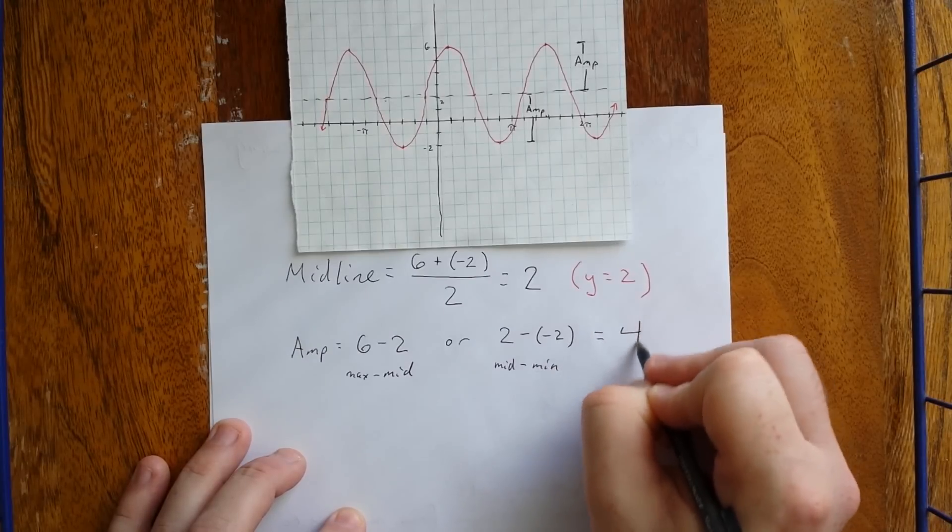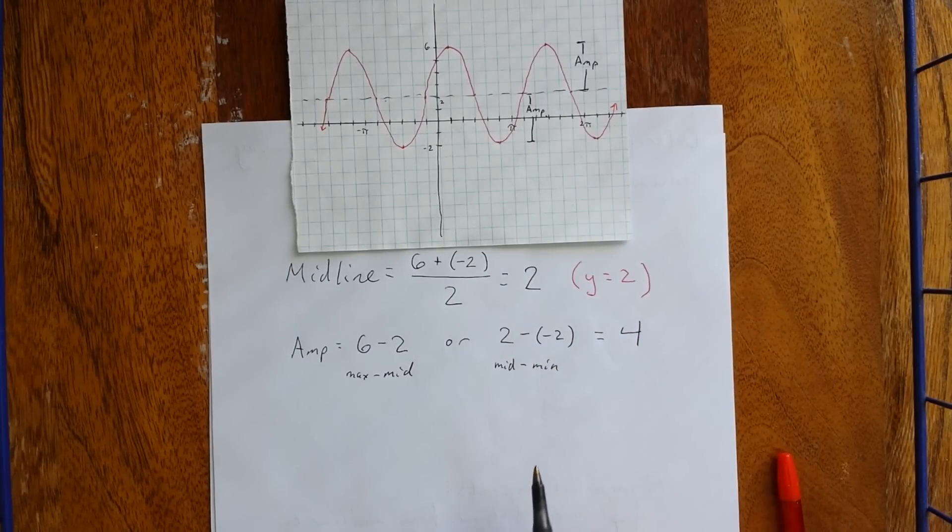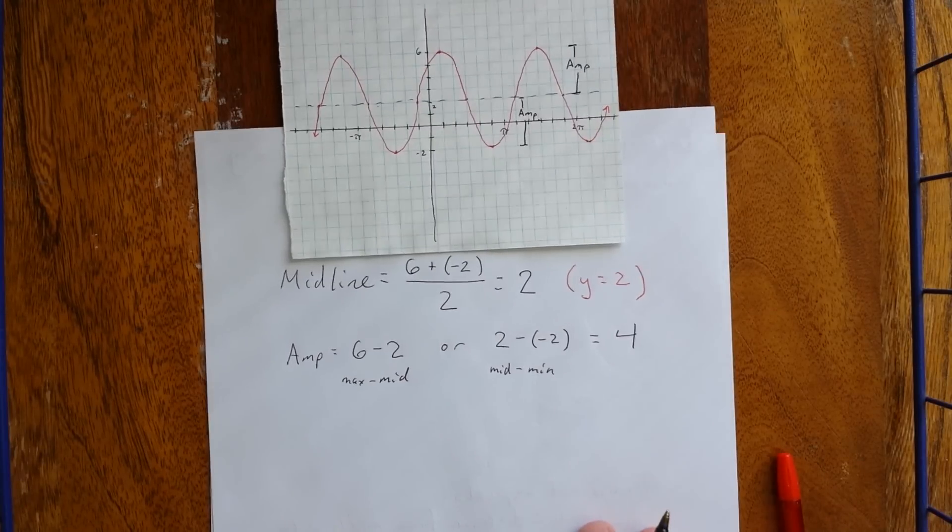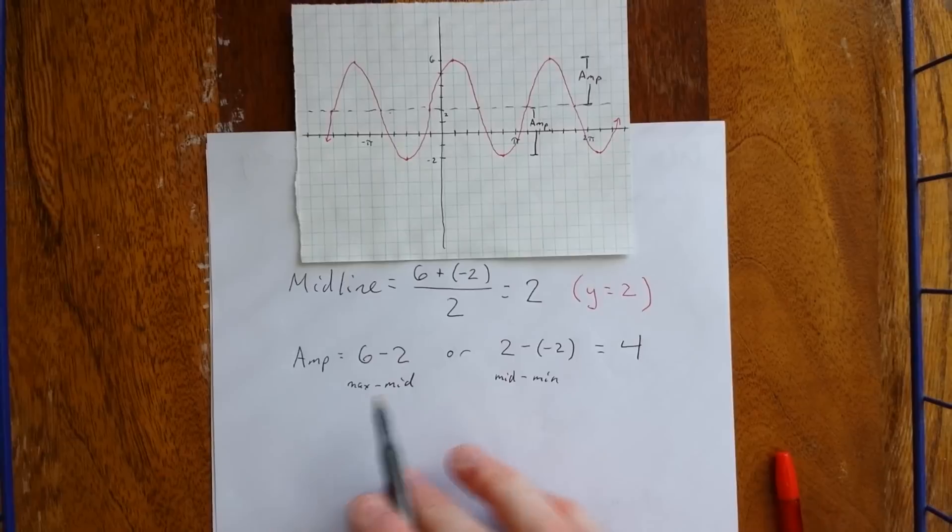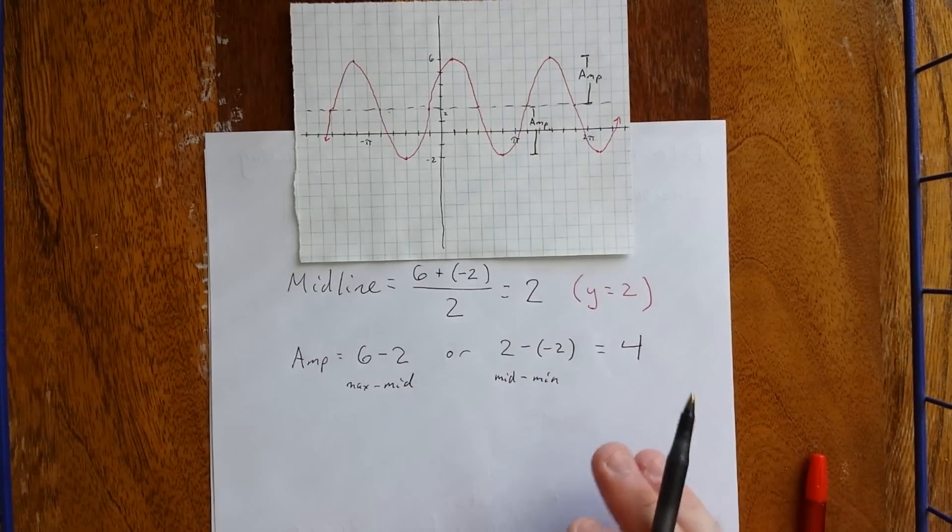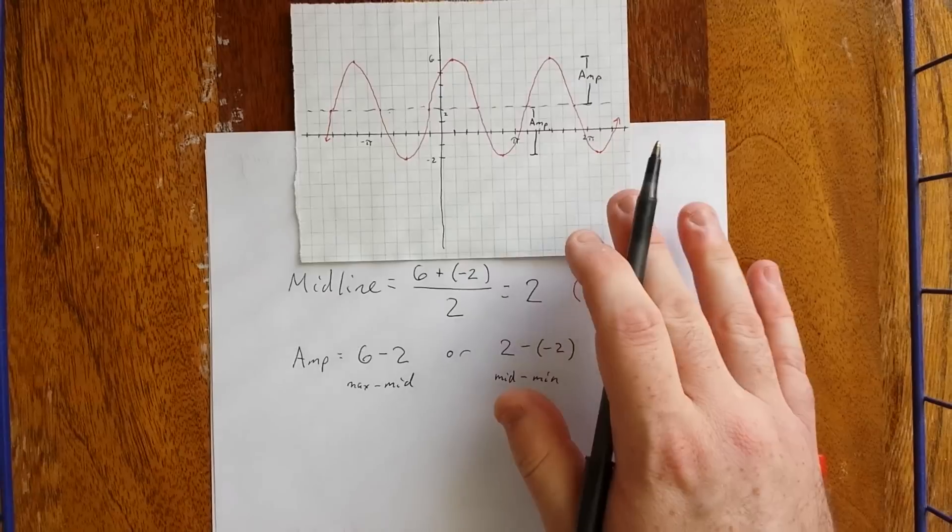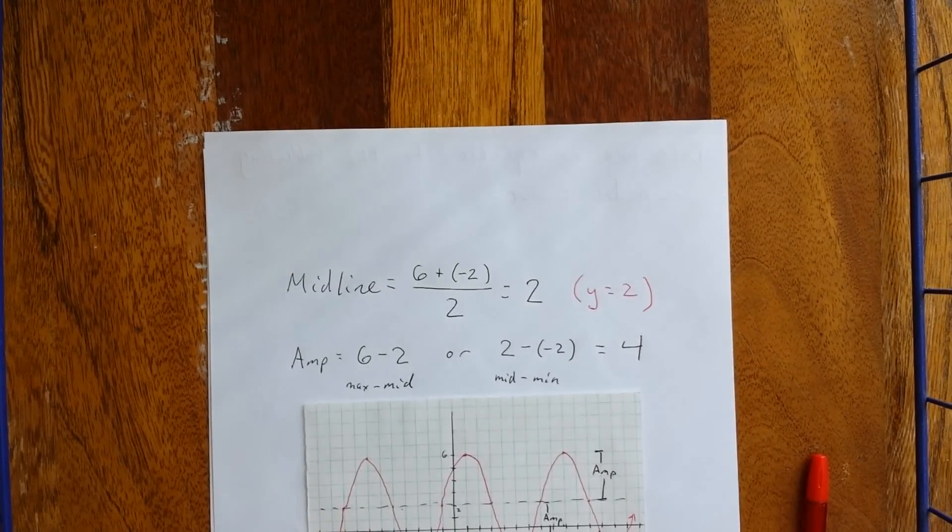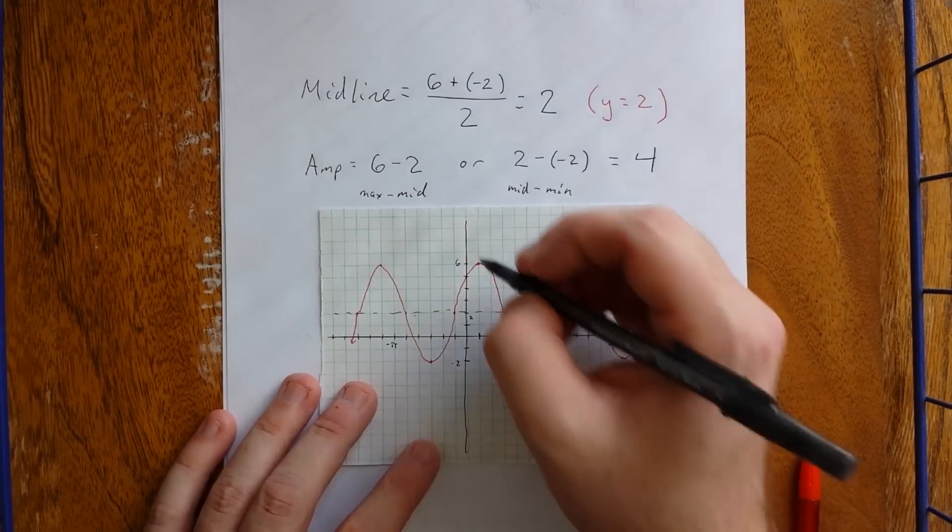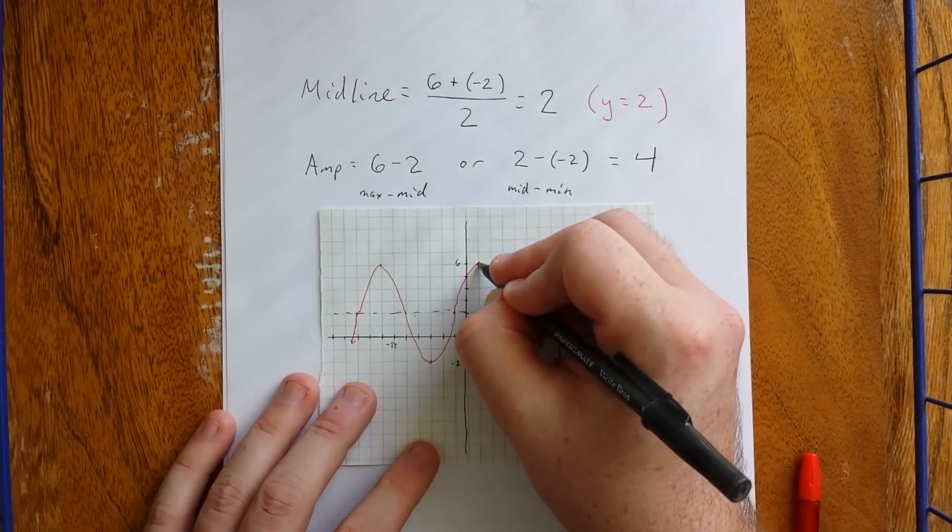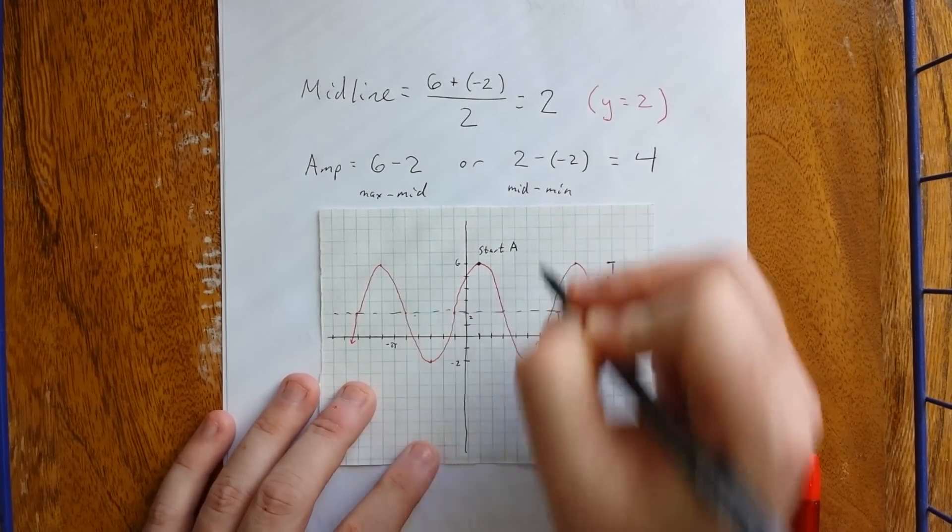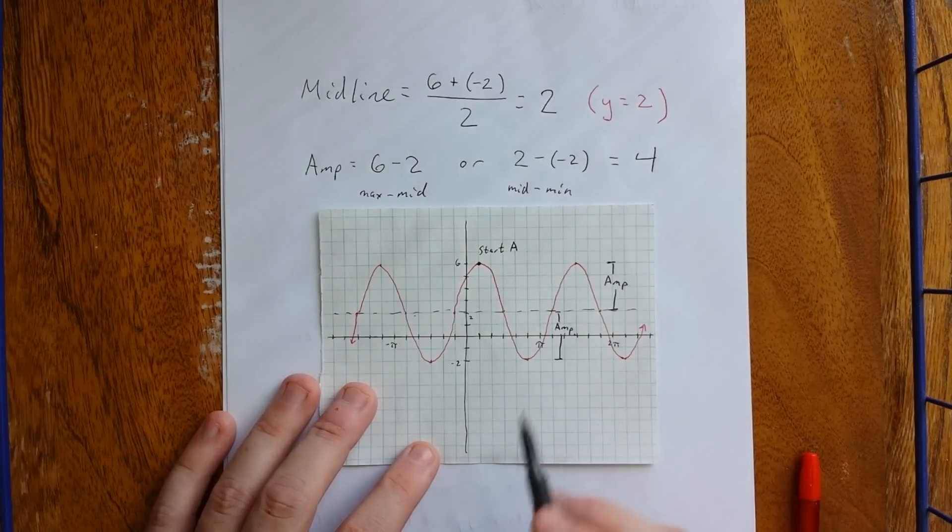Now, if you ever get a negative value for either one of those, chances are pretty good you just reverse the order. Take the absolute value of whatever you get and you got yourself the amplitude. So, now we've got the midline and we've got the amplitude. From here, we get to select a starting point. So, we're actually going to do this two different ways. I'd like to try using a starting point for a cosine graph and then one for a sine graph. Let's start with the cosine graph. I'm going to use this point right here as my starting point. And we'll refer to this as starting point A because we're going to do this two different ways.